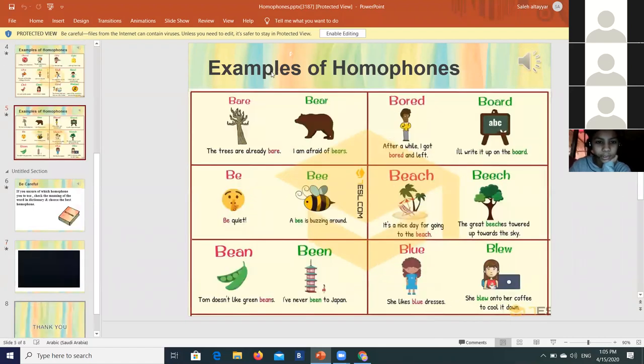The next one, examples of homophones, more examples. A 'bear' - I think a broken tree? Yes, that's right, one point. A 'bear' is an animal that eats honey and fish.